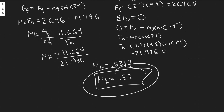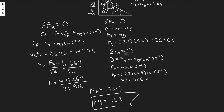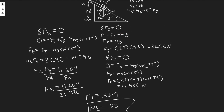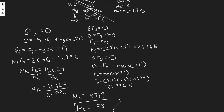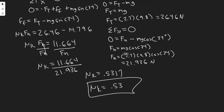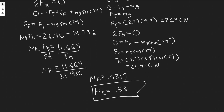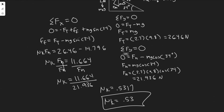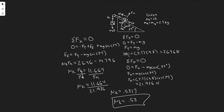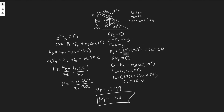So μk = 0.53 is your answer to Part B — the smallest coefficient of kinetic friction to keep the system from accelerating. For Part B, whenever they say 'keep from accelerating,' set a = 0 and solve normally. The answer to Part A was a = 1.55 m/s².